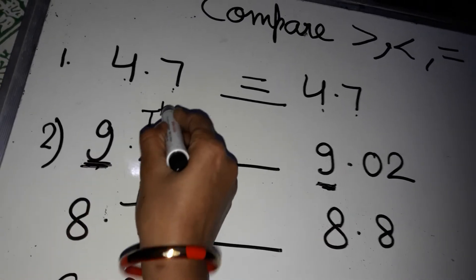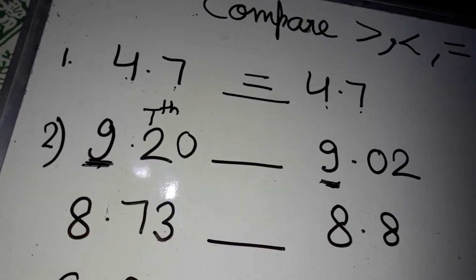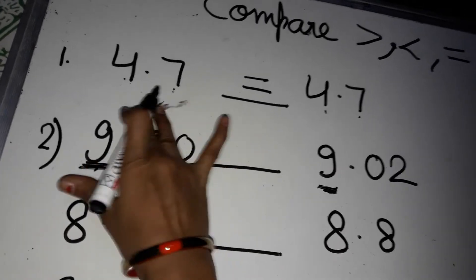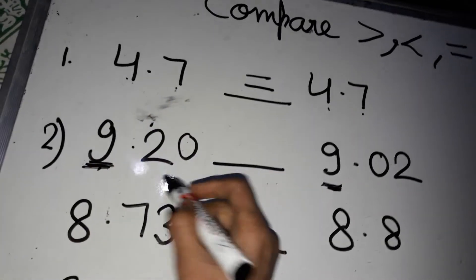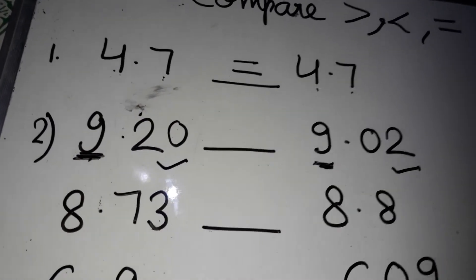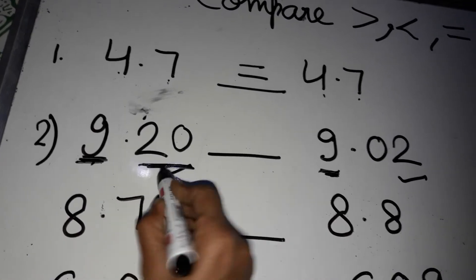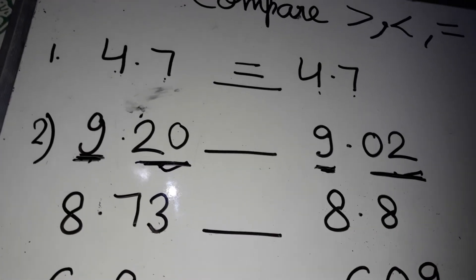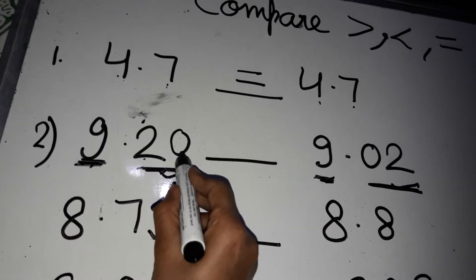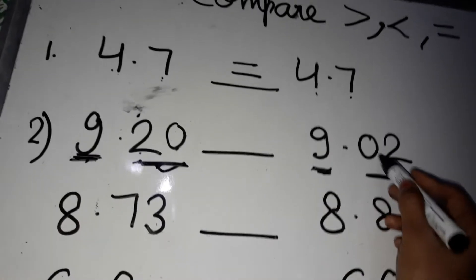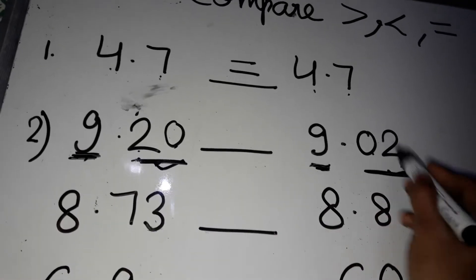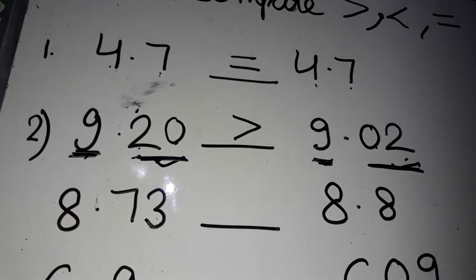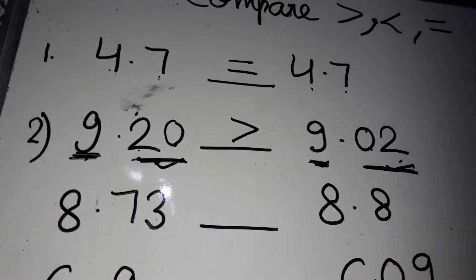Now you will move to the tenth place. First, you will see whether they are like decimals or not. It has two decimal places and it also has two decimal places. This is 20 and this is 02. So which is big? 9.20 is bigger than 9.02.